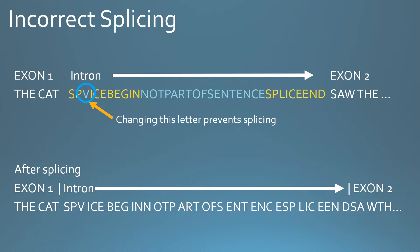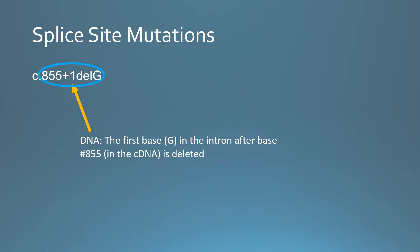Most splicing mutations are either at the very beginning or the very end of an intron, as illustrated in this example. This is an example of a splice site mutation at the beginning of an intron, and the numbering is 855+1.